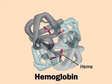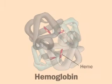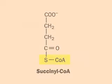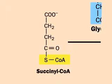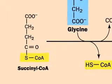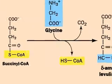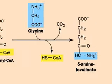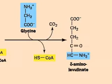Synthesis of heme-porphyrin rings, such as those in this hemoglobin molecule, begin with succinyl-CoA. Succinyl-CoA condenses with glycine to form delta-aminolevulinate.